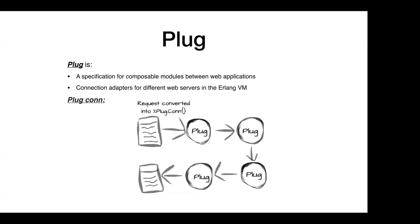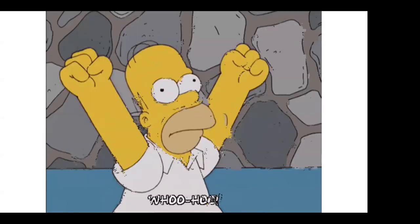Plug is a specification for composable modules between web applications and a connection adapter for different web servers in the BEAM VM. When a request is sent, it goes through one plug, then another, then another, and after all plug modules it goes to the router.